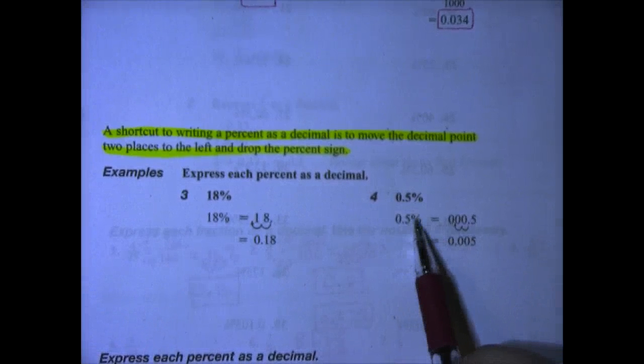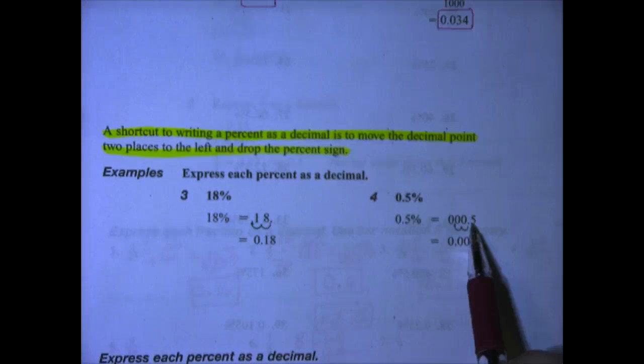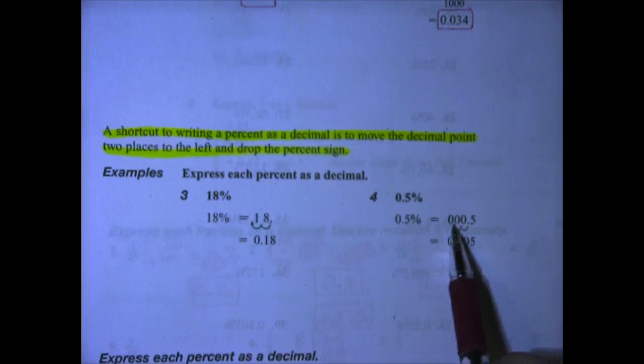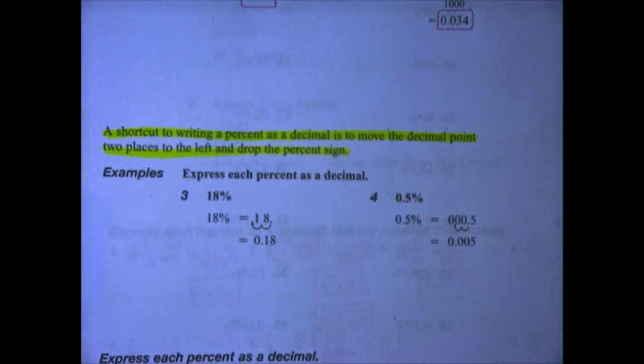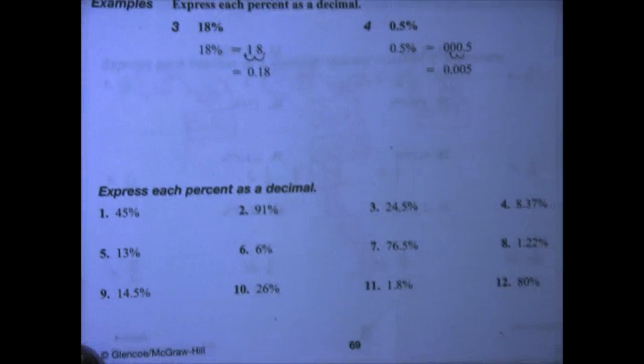Here we have 0.5%. We're going to move our decimal point one, two places to the left, and we get 0.005 or 5 one-thousandths. Let's take a look at the bottom and look at some examples.